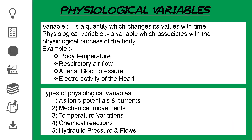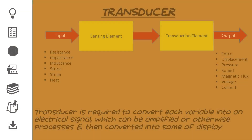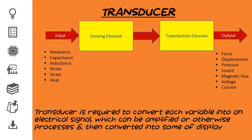As introduced in the first video, a transducer is a device that can convert one form of energy into another. This block diagram shows the basic working function of the transducer. The input represents the energy you want to convert, such as resistance, capacitance, inductance, or stress.